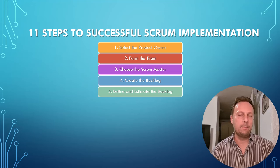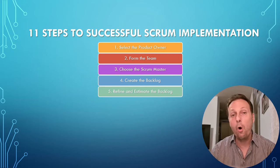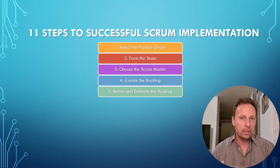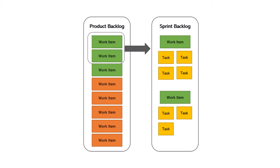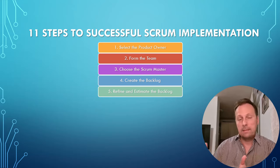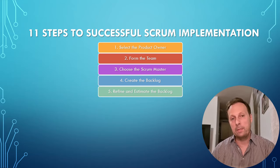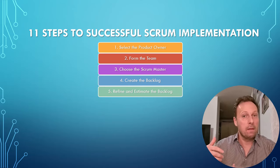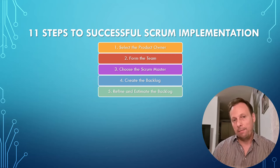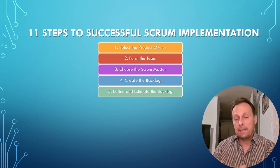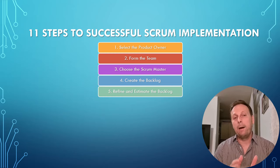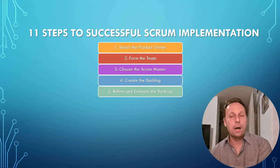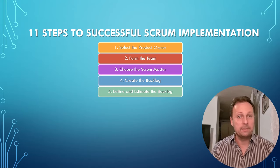Step five: refine and estimate the backlog. The key is to have the people who will actually perform the tasks estimate how much effort each task requires. The team needs to analyze each backlog item and determine: can it be done? Does it have enough information to complete it? Is it small enough to be estimated? Is there a definition of done — an agreement on the standards that must be met for something to be called done? Does it create visible value? Each item must be presentable, demonstrable, and ideally deliverable. Don't estimate in hours, as people are not good at it. Estimate by relative size — small, medium, or large — or even better, use the Fibonacci sequence.